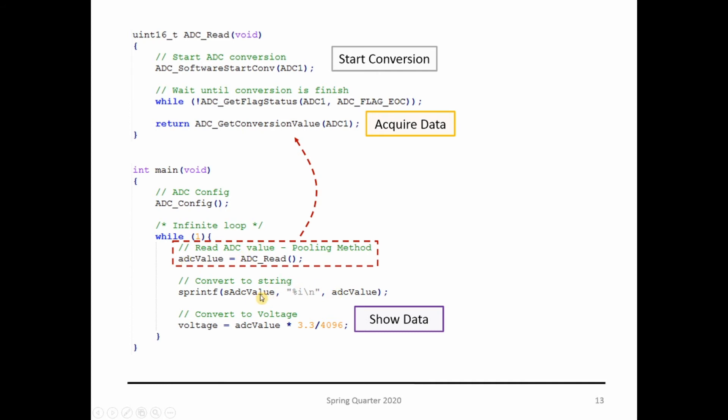It returns the value formatted to a string, and I'm also converting to voltage. Be careful with sprintf—it can be a heavy function to use. Be aware that when you use these types of functions to convert things to strings in a microprocessor, they can consume a lot of time.